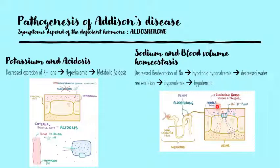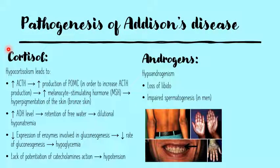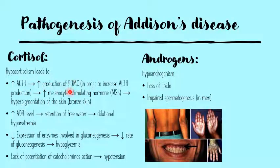Because not enough water is being reabsorbed, there will be a decrease in blood volume — hypovolemia — and consequently hypotension. Damage to the zona fasciculata leads to decreased levels of cortisol. Low cortisol leads to an overactive pituitary gland trying to compensate by increasing ACTH. To increase ACTH, it must first increase the production of pro-opiomelanocortin, or POMC for short. This has the undesirable side effect of also increasing levels of MSH, which leads to overactivity of melanocytes in the skin, causing the hyperpigmentation or bronze skin that is a very characteristic feature of Addison's disease.